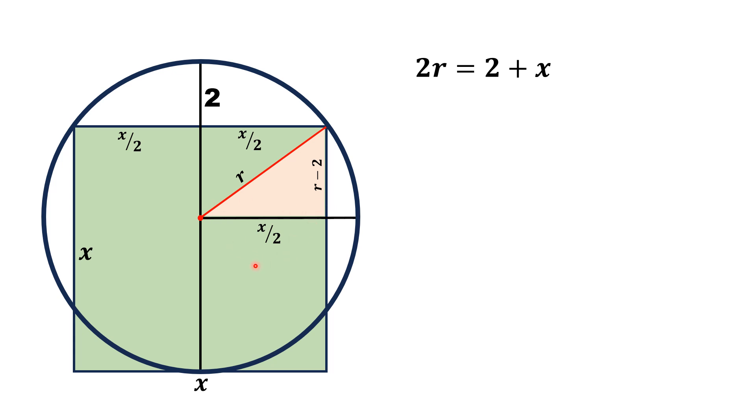Now using Pythagorean theorem on this right triangle, we have r² = (x/2)² + (r - 2)². Simplifying these terms, r² will cancel out with r², and taking this -4r to the left, we will get 4r = x²/4 + 4.